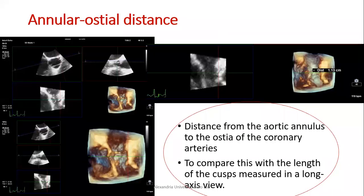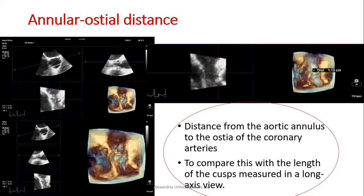It is important to report the annular-ostial distance — the distance from the aortic annulus to the ostium of the left main coronary artery — and compare it with the cusp length measured in the long-axis view. This distance should be less than the cusp length, otherwise there is risk of coronary artery obstruction.